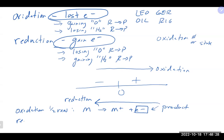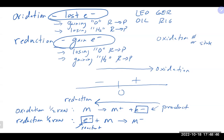A reduction half reaction has the opposite: the electrons are on the reactant side, meaning they are being gained. In redox reactions, we look at these half reactions — oxidation and reduction parts separately. Electrons should never be on the same side in both half reactions, because someone should be losing and someone should be gaining electrons.